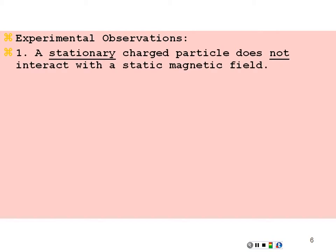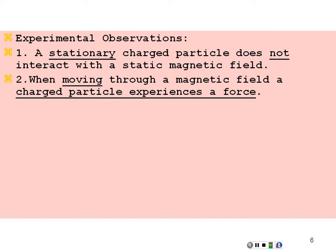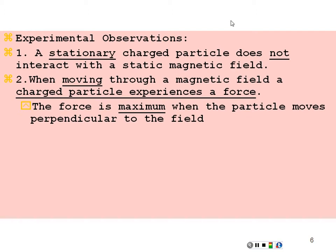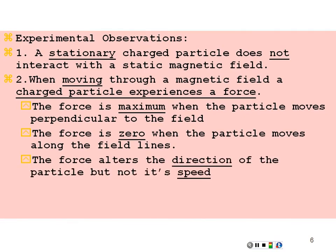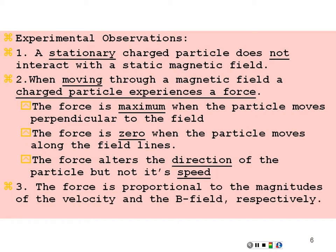Some key experimental observations: a stationary charged particle does not interact with a static magnetic field — if it's not moving, nothing happens. But when moving through a magnetic field, a charged particle experiences a force. The force is maximum when the particle moves perpendicular to the field, and zero when the particle moves parallel or anti-parallel to the field lines. The force alters the direction of motion but not the speed, since it is always perpendicular to the velocity.